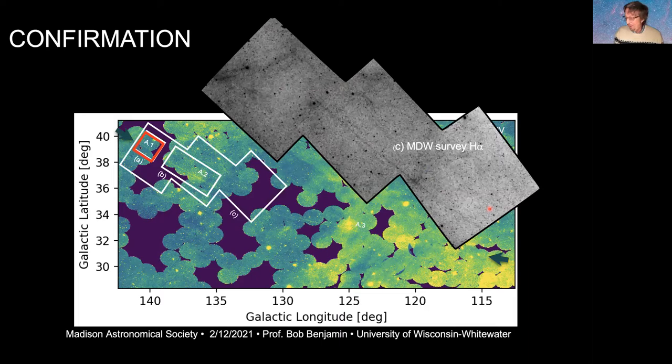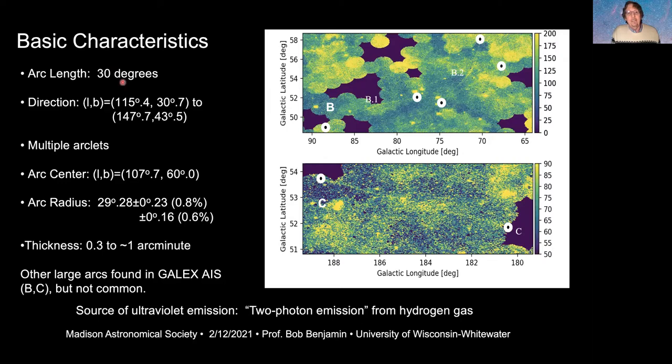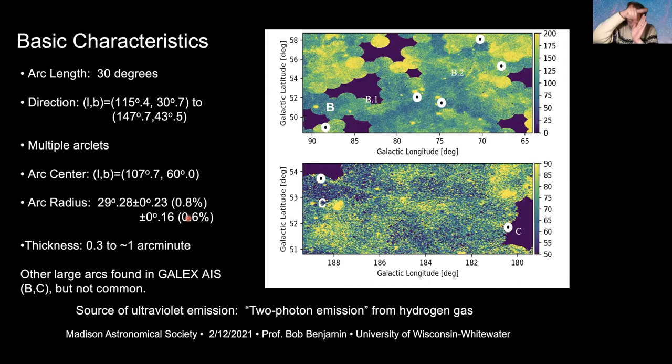Basic characteristics: the arc is 30 degrees long, with a 60-degree diameter circle. Interestingly, it seems to break into little arcs — slight offsets — but they all follow the major arc. What makes it really unique compared to anything else in astronomy is how incredibly thin it is — it looks like someone laid a protractor in the sky and traced an arc, occasionally slipping. That thinness really differentiates it from any shell or arc astronomers have seen at other wavelengths.